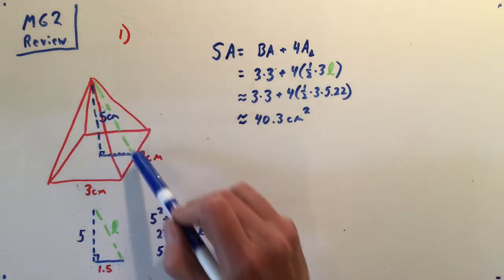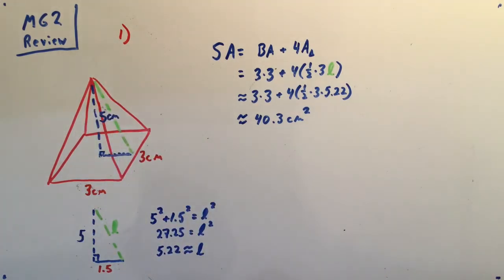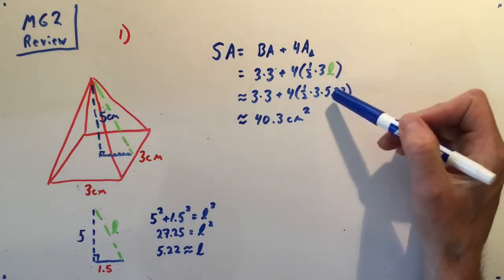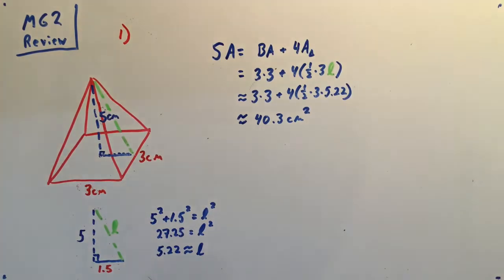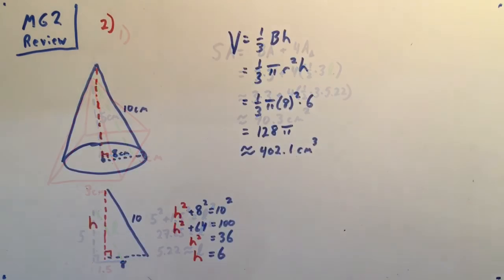That slant height that you see there in green represents the height of any one of these four triangles. So you can just plug in your 5.22 in for that, and you end up with the surface area of this square base pyramid of 40.3 square centimeters.